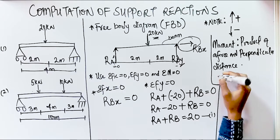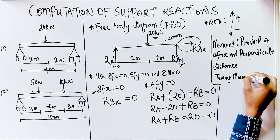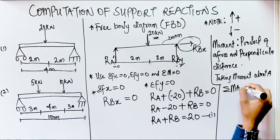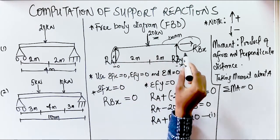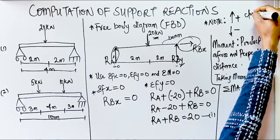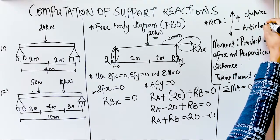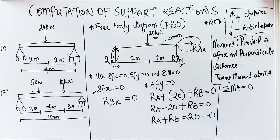Taking moments about support A, we write: summation of moments about A = 0. Since Ra tends to zero at that point, we are left with two vertical forces: 20 kilonewtons and Rby. We also need to know that moments can be clockwise or anti-clockwise — clockwise is treated as positive and anti-clockwise as negative.